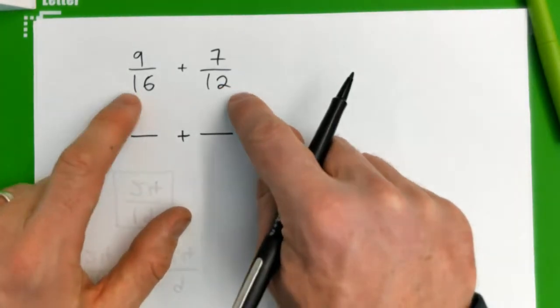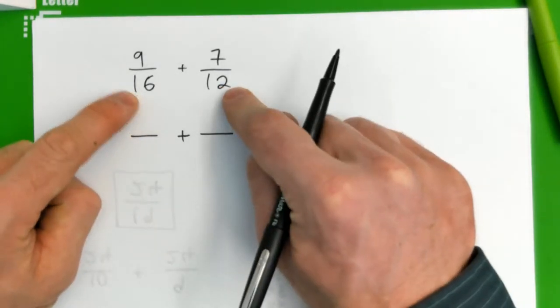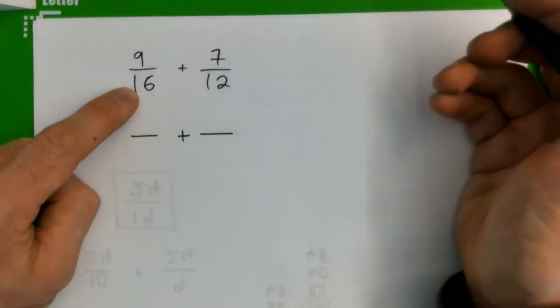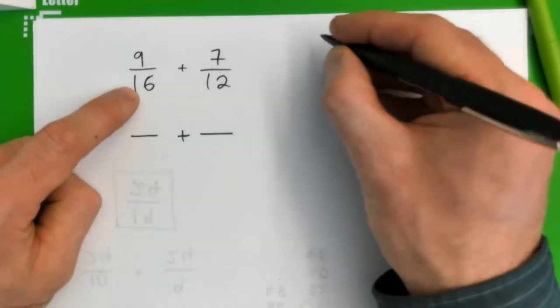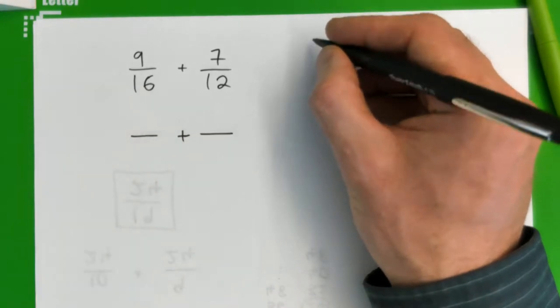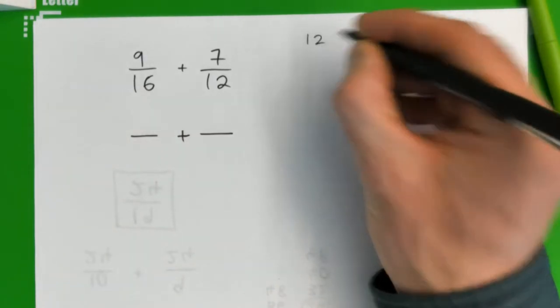What we need to do is find the lowest common multiple of these two numbers, these two denominators. One way is to write out the multiples of 12 and then the multiples of 16. So multiples of 12, write them down...